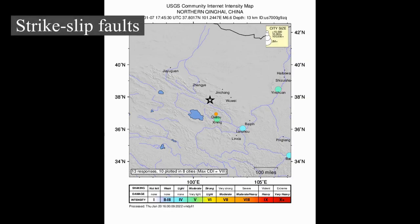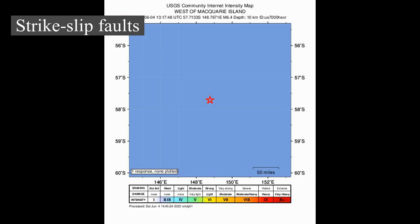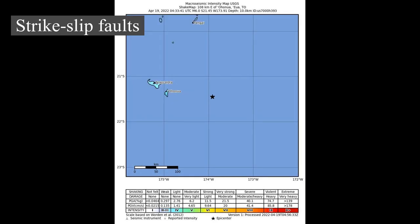Strike-slip faults are steep structures where the two sides of the fault slip horizontally past each other. Transform boundaries are a particular type of strike-slip fault. Strike-slip faults, particularly continental transforms, can produce major earthquakes up to about magnitude 8. They tend to be oriented near vertically, resulting in an approximate width of 10 km (6.2 mi) within the brittle crust, so earthquakes with magnitudes much larger than 8 are not possible. There exists a hierarchy of stress levels: thrust faults are generated by the highest stress, strike-slip by intermediate, and normal faults by the lowest stress levels.